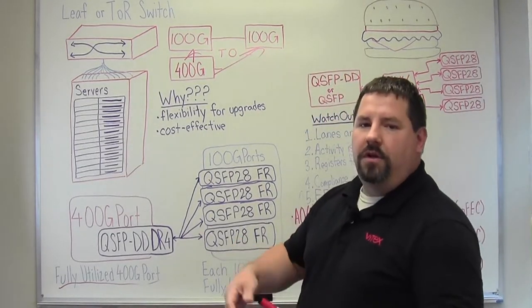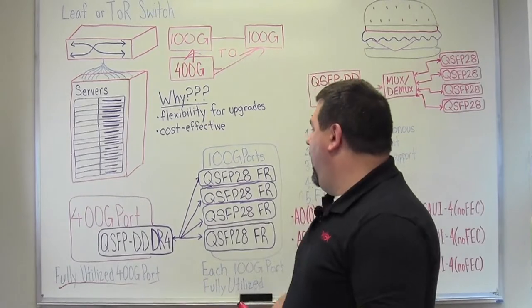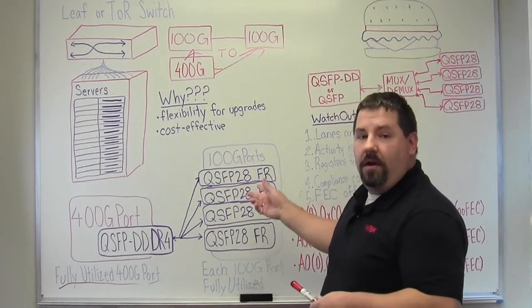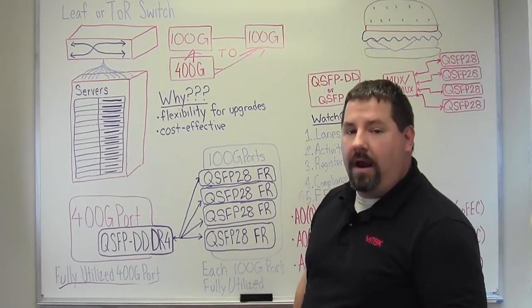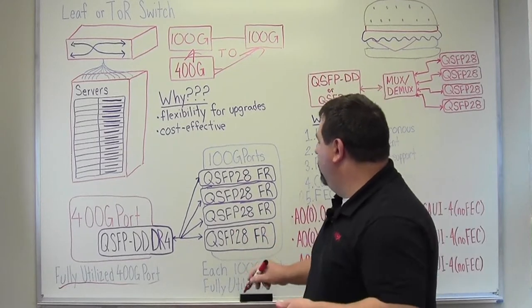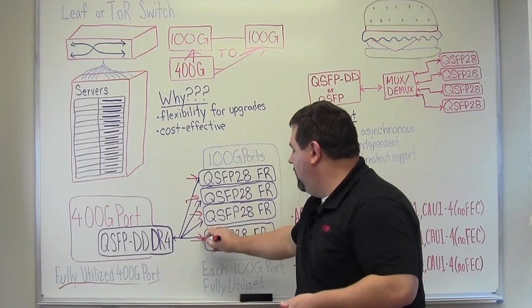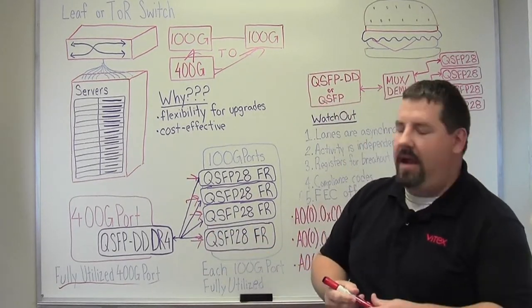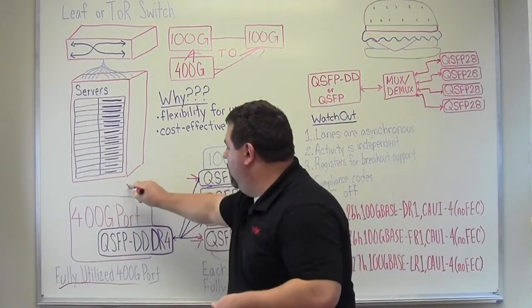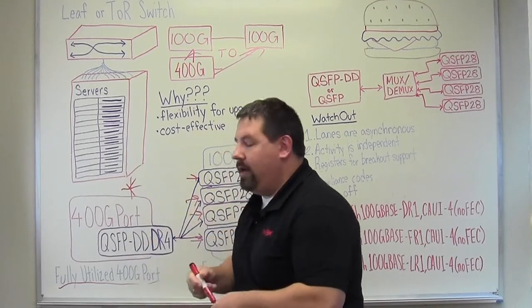So here's an example of a 400GB DR4 and we're going to pair this with either a single lambda DR1 or FR1. So we're going to be able to use all of existing connections that we have and we're going to only upgrade this one area. So what's the benefit of doing this?